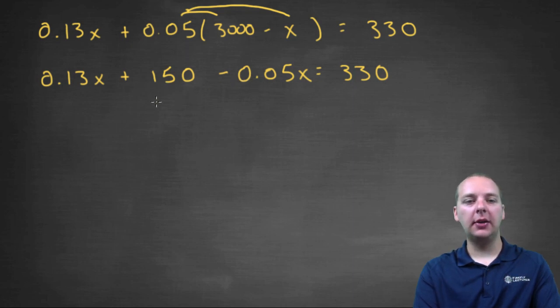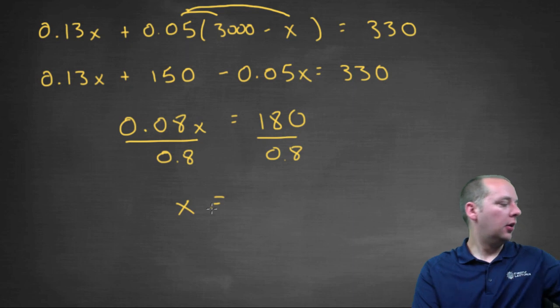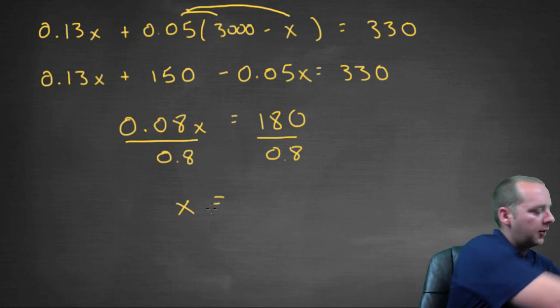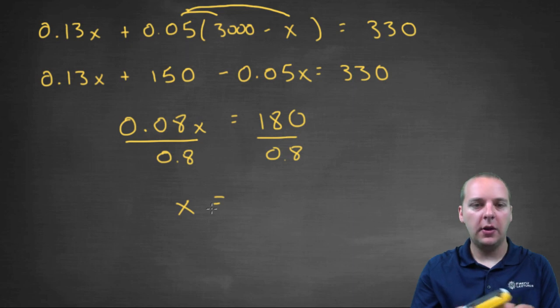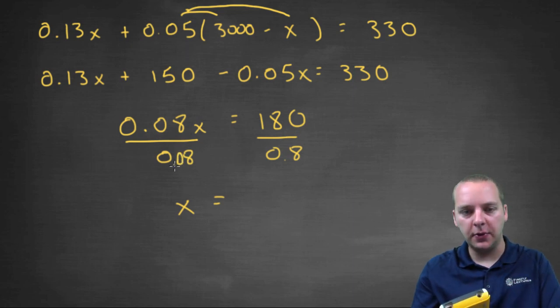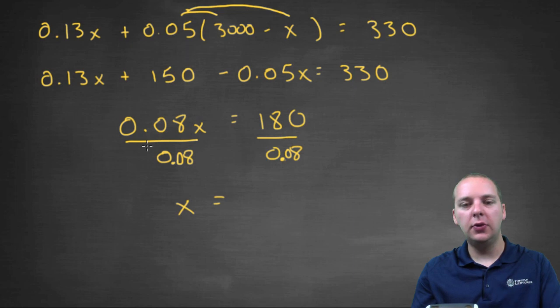Still a linear equation. Let's combine like terms. 0.13X minus 0.05X would be 0.08X equals, subtract one hundred and fifty to the other side, we'd have one eighty. Divide both sides by zero point zero eight. And actually that should be zero eight, I just noticed my typo, sorry about that. Zero point zero eight, let's be careful with that. It would be two thousand two hundred and fifty dollars.